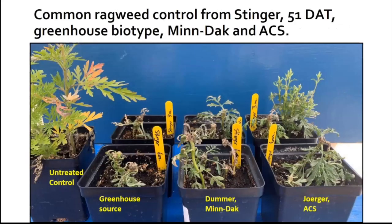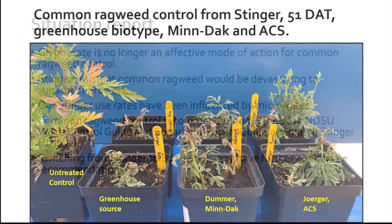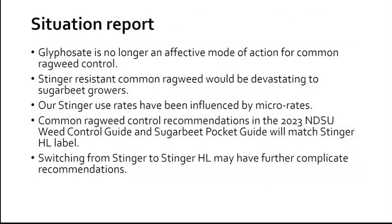Here is a picture of three seed sources of common ragweed: one from our greenhouse source, one from the MnDAC source, and one from the ACS source. Note the two rates applied — the 6-ounce and the 3-ounce rate. In the rear row, that 3-ounce rate on the ACS source shows seed heads forming — that's not good. Glyphosate is no longer an effective mode of action for common ragweed control, and Stinger-resistant common ragweed would be devastating to sugar beet producers.